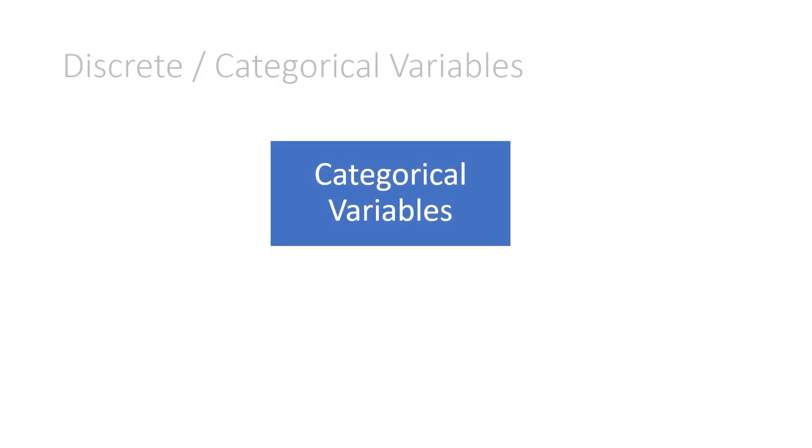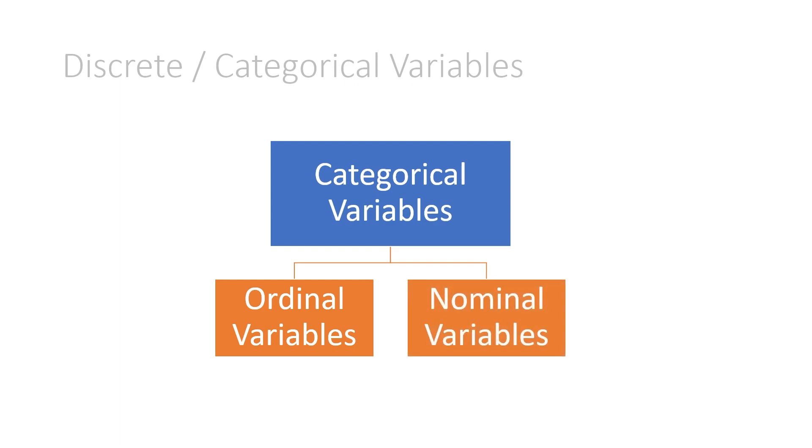We need encodings because of discrete/categorical variables. Remember that categorical variables are either ordinal, they have an order, or they are nominal, they don't have an order. So firstly, nominal categorical variables. An example could be that the possible classes for a variable were cat, dog, or zebra.